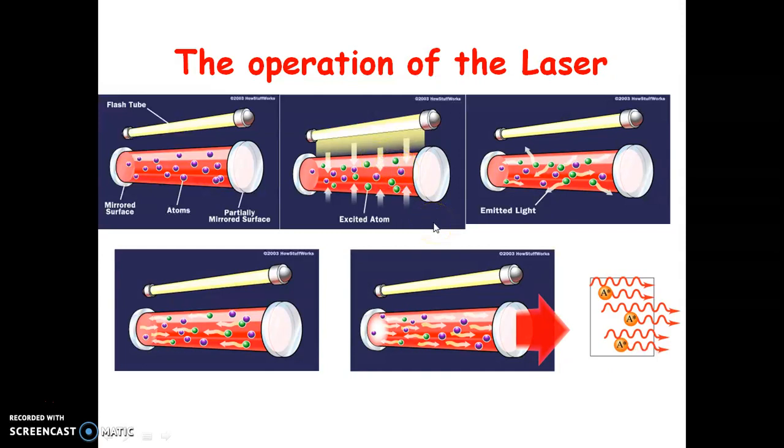Then they decay to the metastable state. Here the energy is transferred through thermal vibration. So when they decay to the metastable state, they will remain there for 10 to the minus 3 seconds and population inversion is achieved in the metastable state. Initially when population inversion is not there, some of the chromium ions decay to the ground state after completion of lifetime from metastable state. Then they emit radiations of wavelength 6943 angstroms.